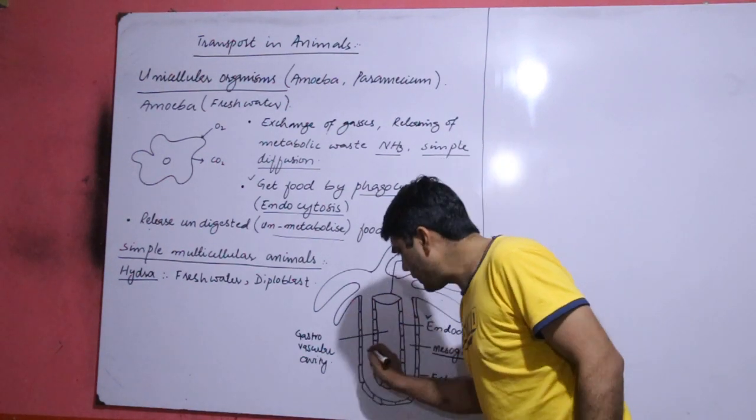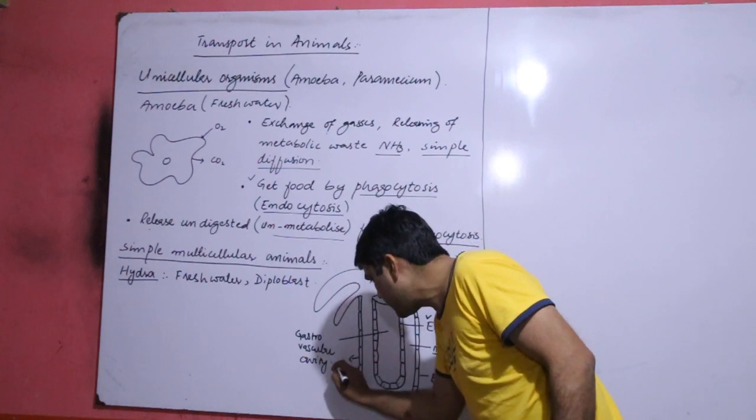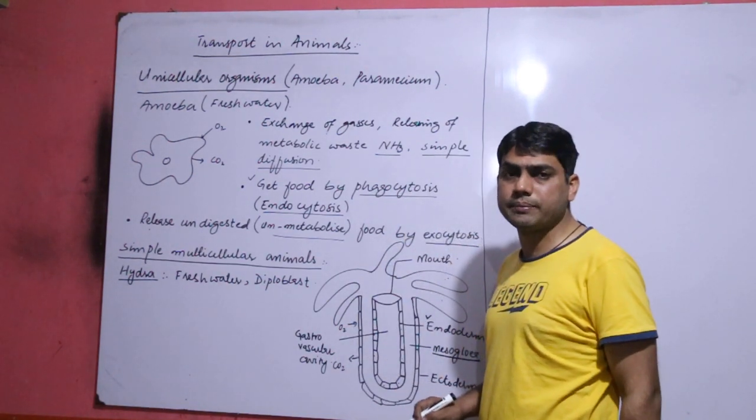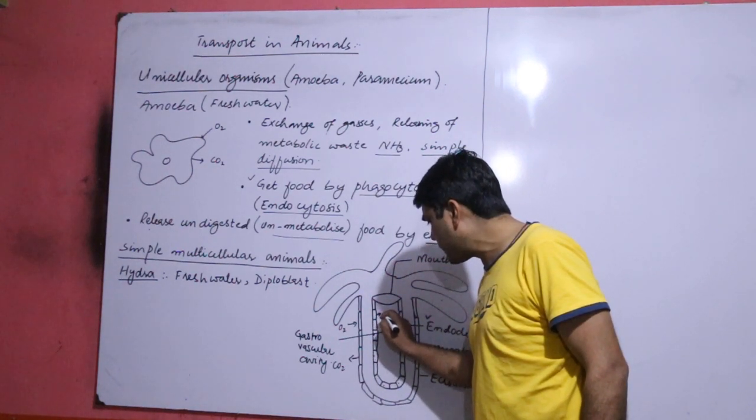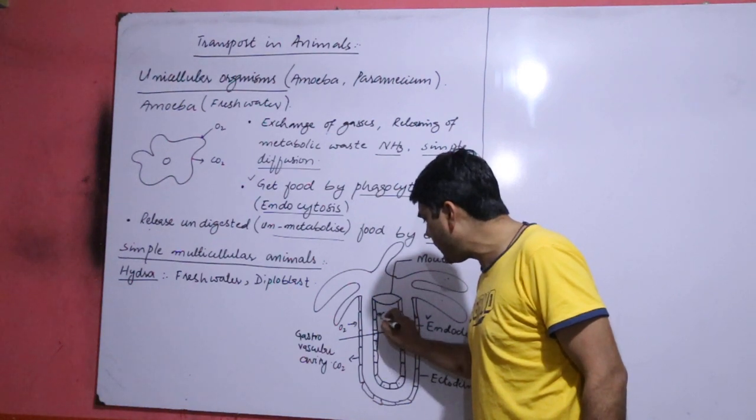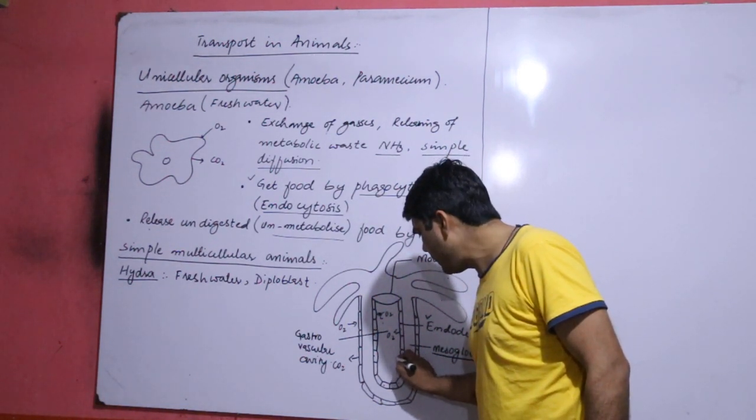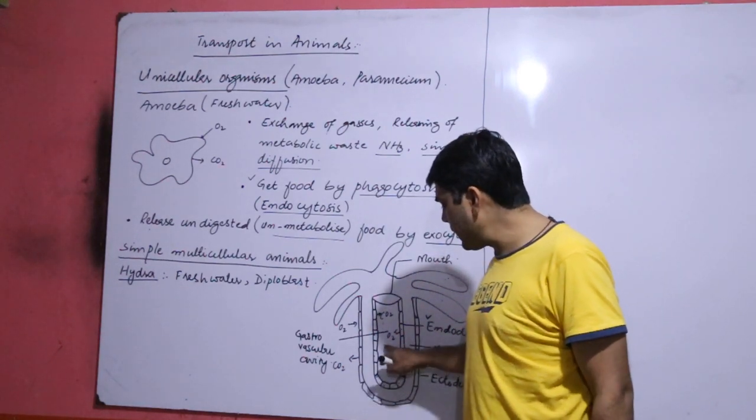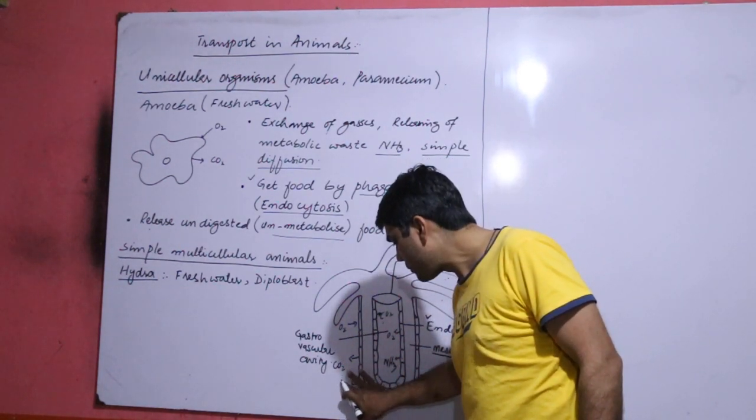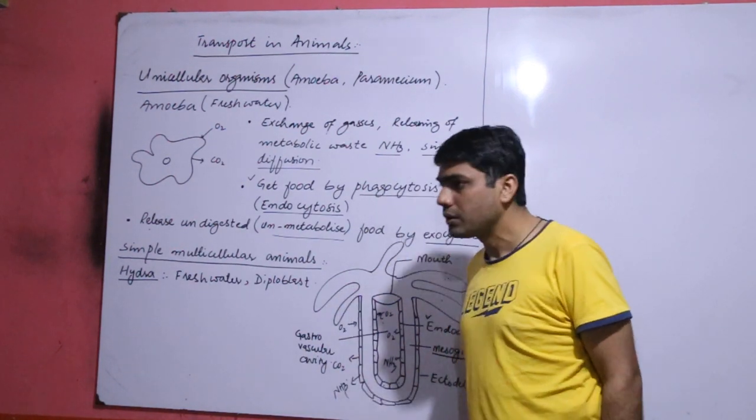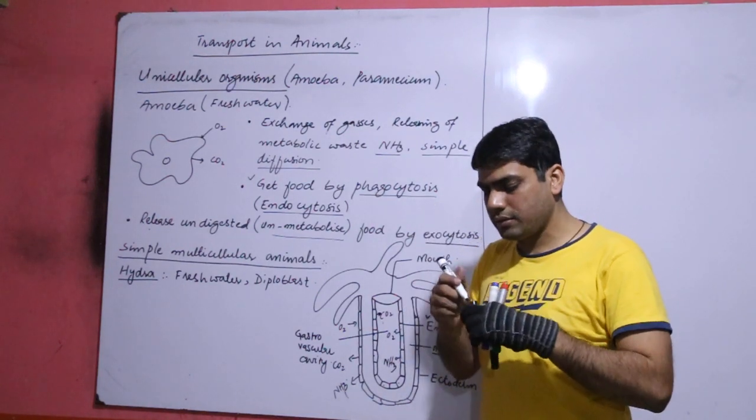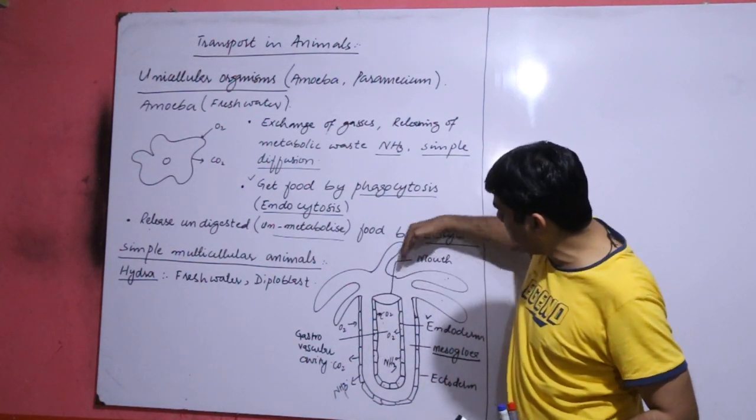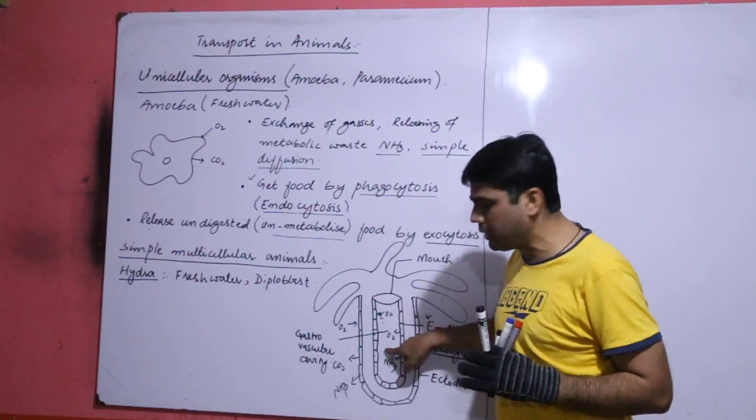About the gaseous exchange, the outer cells release carbon dioxide directly into the water and get oxygen directly from the outer water. Inner cells do such activity directly with the inner water. They release ammonia with their waste directly in this water. So by contraction and relaxation, when hydra contracts, the old water or previous water releases out from the body, and when hydra relaxes, new water enters into the body.